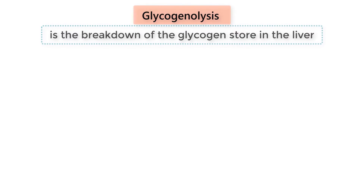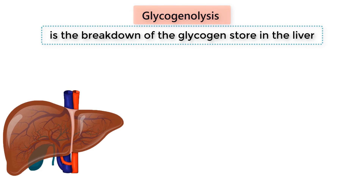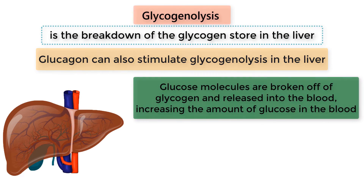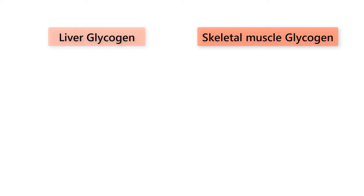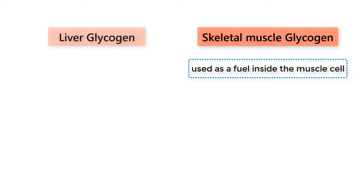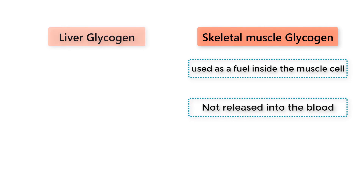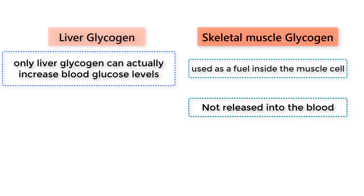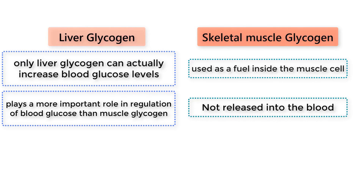Glycogenolysis is the breakdown of the glycogen stores in the liver. Glucagon can also stimulate glycogenolysis in the liver. Glucose molecules are broken off of glycogen and released into the blood, increasing the amount of glucose in the blood. However, there is an important difference between liver glycogen and skeletal muscle glycogen. Skeletal muscle glycogen is used as a fuel inside the muscle cell, but muscle glycogen is not released into the blood. Therefore, only liver glycogen can actually increase blood glucose levels, and liver glycogen plays a more important role in regulation of blood glucose than muscle glycogen.